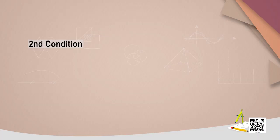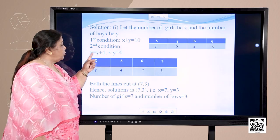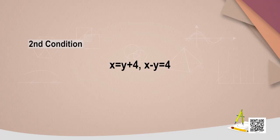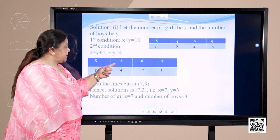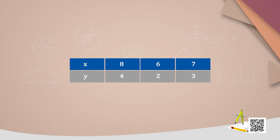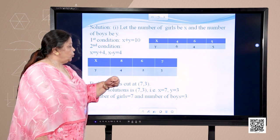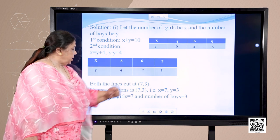Likewise, for the second condition, x is equal to y plus 4, because girls are 4 more than the boys. So x is equal to y plus 4, or x minus y is equal to 4. If I put the values of x — if I take x as 8, I get y is equal to 4. On taking x is equal to 6, I get the value of y as 2. Likewise, when x is equal to 7, y is equal to 3.